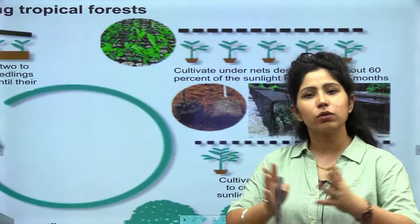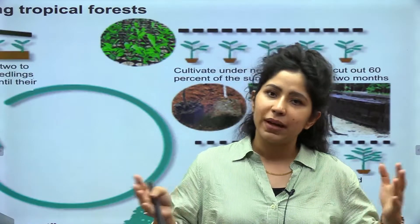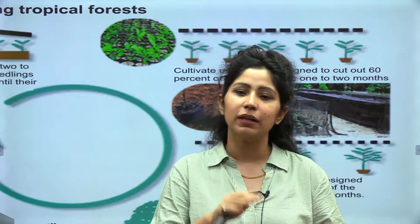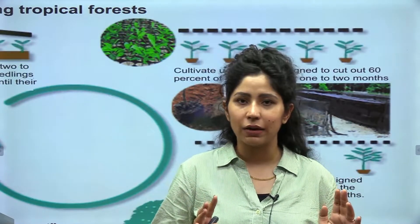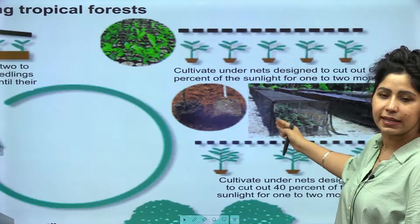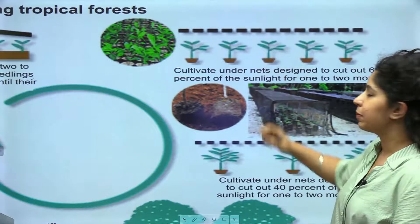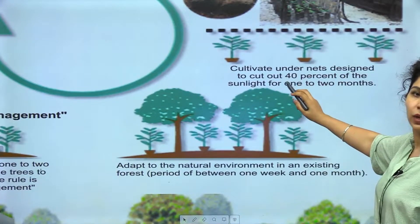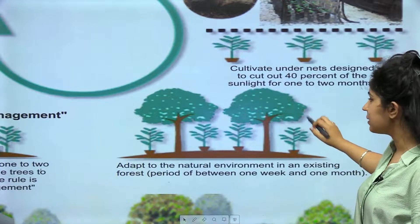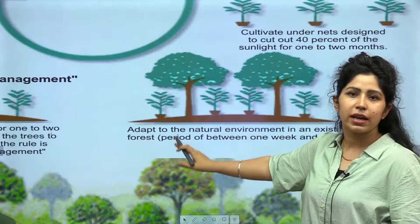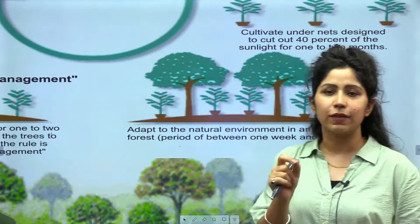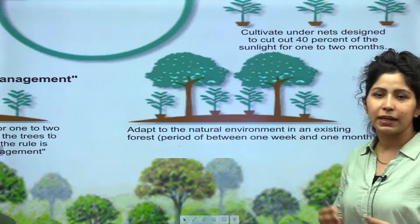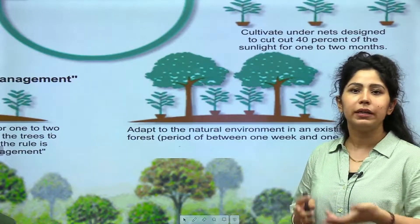When leaves start emerging from the saplings, they are kept inside a net where sunlight falls only from above, not from the sides. Since sunlight is falling only from above, these plants will grow upwards rather than sidewards. If plants grow sidewards, one single plant occupies a lot of area, but if leaves grow only upward, you can plant many saplings in a small area.